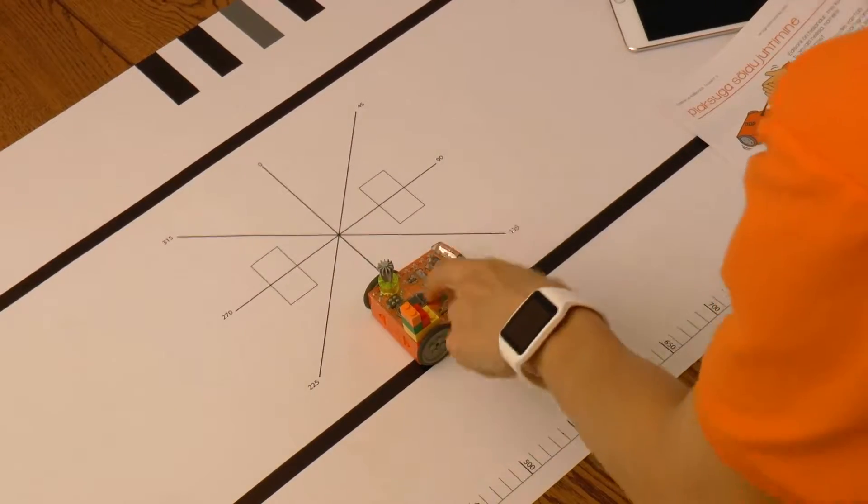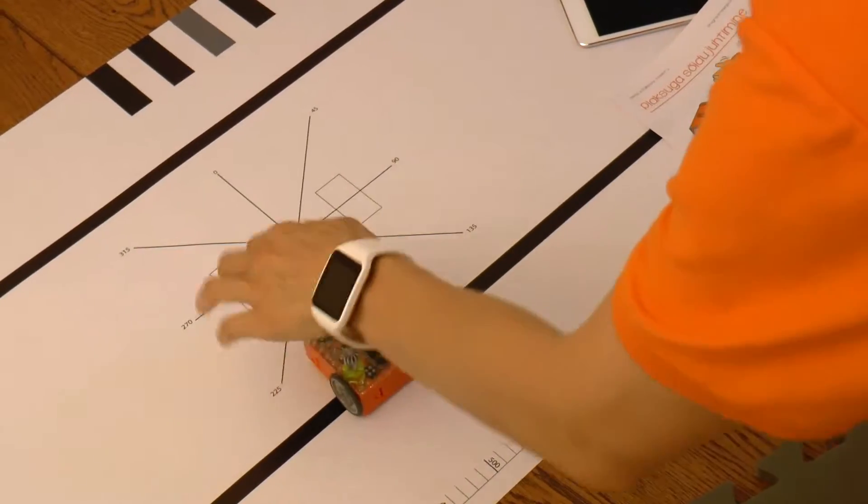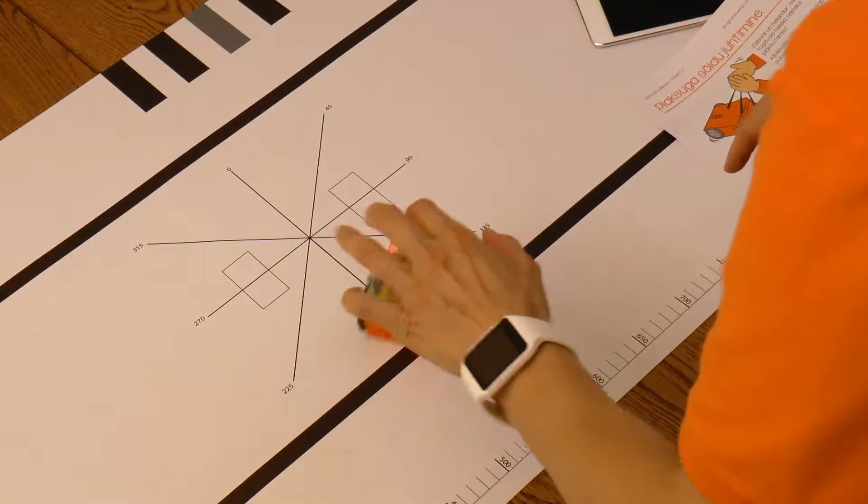We communicate with the robot by clapping our hands once or twice in a row. To stop the program, we press the square button.